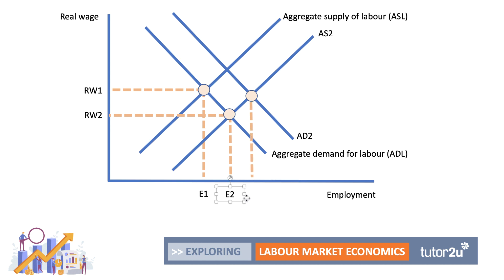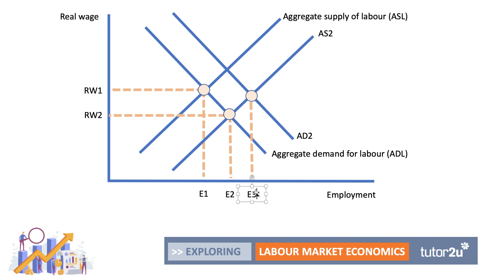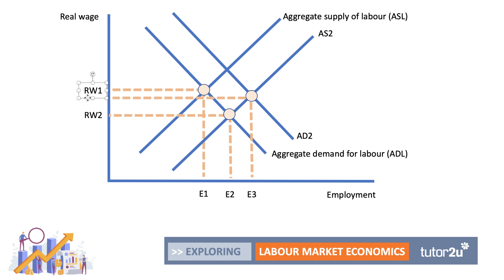All of this links back to the question: what is the impact of migration flows on employment and unemployment? As long as you're linking back to the question and thinking about the consequences for real wages, jobs, and unemployment, you're answering the question. A developed diagram will score high marks — don't just draw supply and demand; shift the curves and explain a story based on what the argument needs to be.